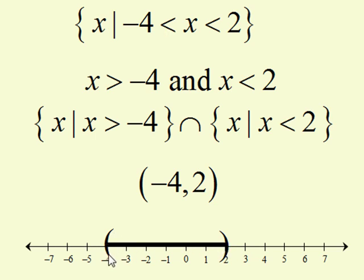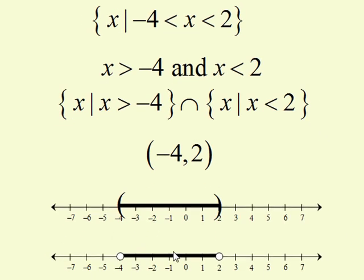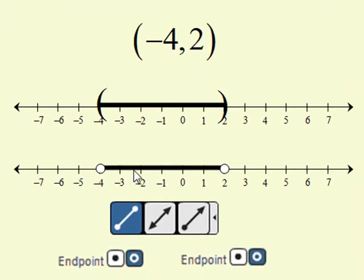We graph this on a number line by showing the interval between negative 4 and positive 2 with a line. On each end of that line, we can put a parentheses. This shows that we are not including the values negative 4 and 2. The way we do this with circle endpoints is with an open circle on each side of the interval. To graph this in WebAssign, we would choose the line segment option and then choose an open endpoint on both sides.